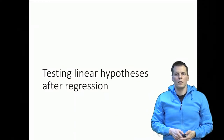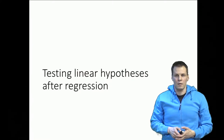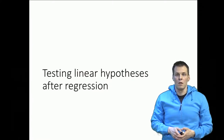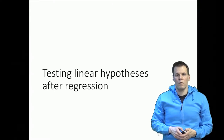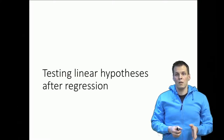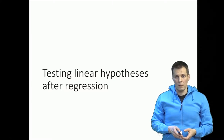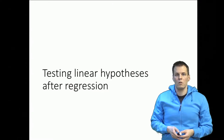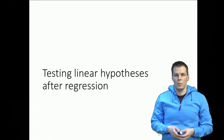Regression analysis gives you estimates of regression coefficients and statistical tests of whether those coefficients are different from zero in the population. Sometimes, however, it is very useful to be able to test other hypotheses — for example, if a coefficient differs from a value other than zero, or if two coefficients are the same in the population. To do that we need to understand how we test linear hypotheses after regression analysis.